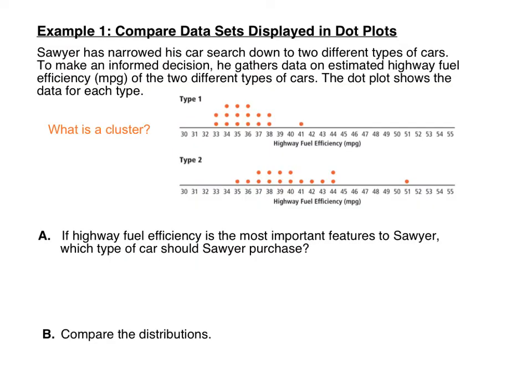In this first example, we're going to compare data sets displayed in dot plots. Sawyer has narrowed his car search down to two different types of cars. To make an informed decision, he gathers data on estimated highway fuel efficiency in miles per gallon of two different types of cars. The dot plot shows the data for each type. When we look at data in a dot plot, a good idea to see where the center of the data is, is to find a cluster.